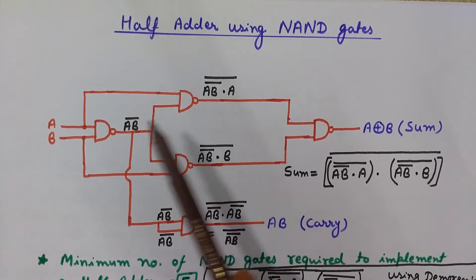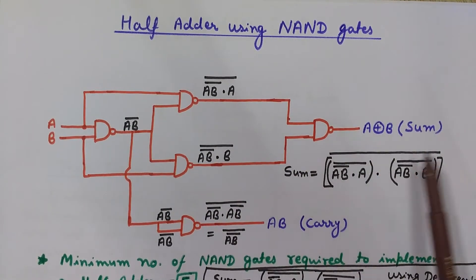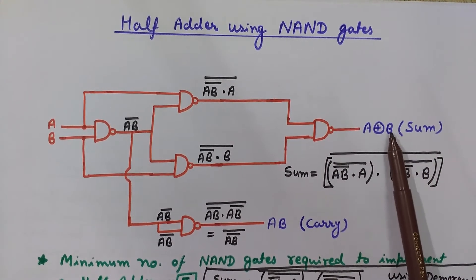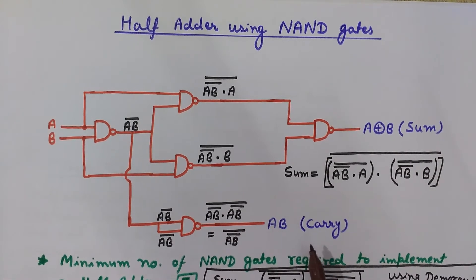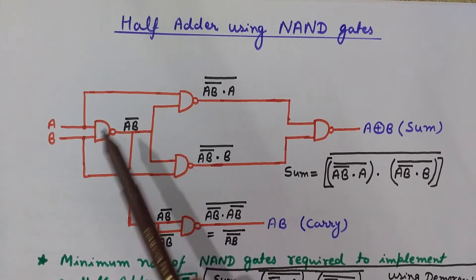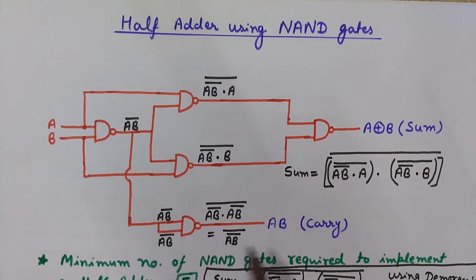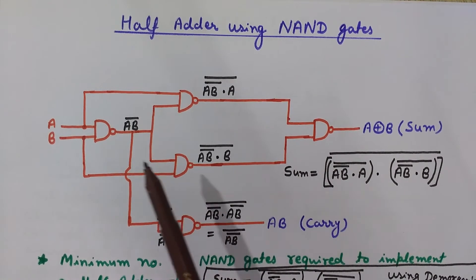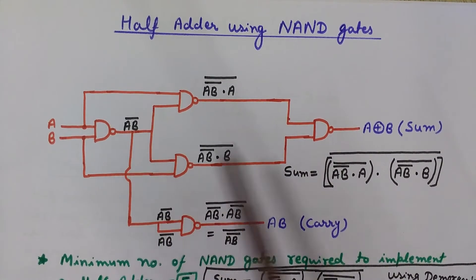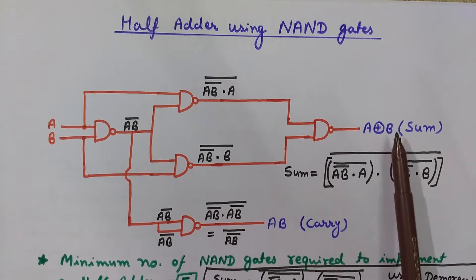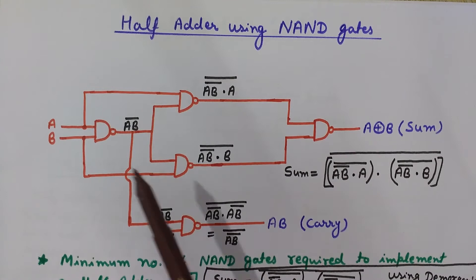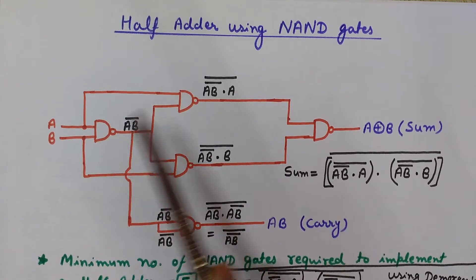Here we have implemented the half adder using NAND gates, and we will derive how it produces the correct outputs. We will see how we get the sum as A XOR B and the carry as A·B. This is the NAND gate representation of the half adder — watch it carefully and let's see how it produces A XOR B as sum and A·B as carry.